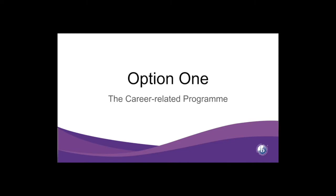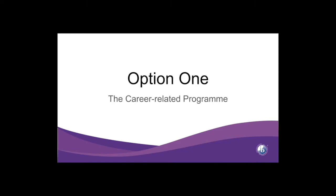The first option at LVA is the Career Related Program. The requirements for the Career Related Program begin with the core. In the core, you have a class called Personal and Professional Skills, where you will learn skills to survive in the workplace and college, like resume writing, interview skills, and those kinds of things. You also have a service learning component that is 50 hours, which will also be done in your Personal and Professional Skills class.